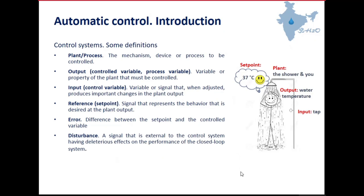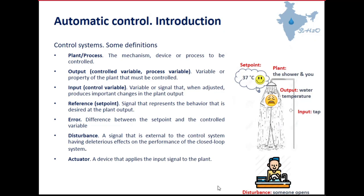A disturbance is something external to our system that affects the process. For example, you are taking the shower and someone in the kitchen starts washing the dishes, changing the flow in the pipe and hence the water temperature — that's a disturbance. An actuator is a device that applies the input signal to the plant — in this case, some kind of valves that modify the tap are the actuators. Constraints are limitations in the variables — for example, there is a maximum and minimum value of the tap aperture.